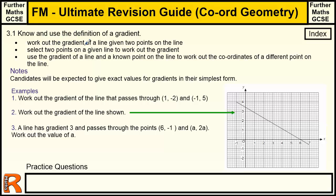What do we need to know? We need to know how to work out the gradient of a line given two points on the line. I'm going to be a little bit controversial here. I'm not a great believer in learning lots of formulas. I'd rather people understood what was going on. I will show you how to do it using a formula, but I will also show you how to do it just by thinking about it. Select two points on a given line and work out the gradient, and use the gradient of a line and a known point on the line to work out the coordinates of different points on the line.